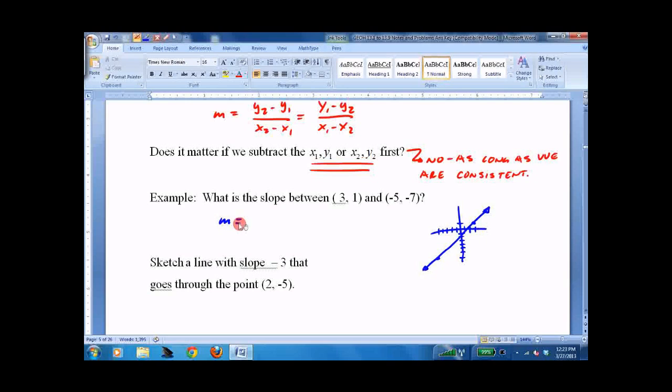Slope is negative 7 minus 1, negative 5 minus 3. Negative 8 over negative 8 equals 1. It's positive. It goes up to the right at a 45 degree angle. Fair enough.